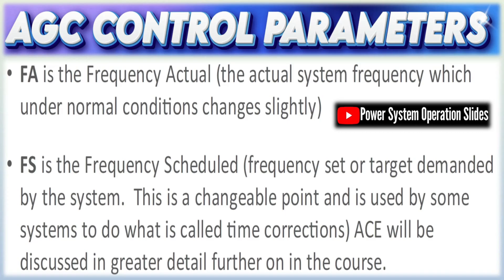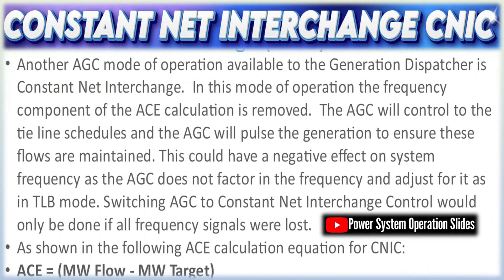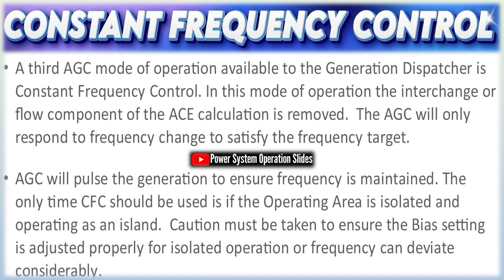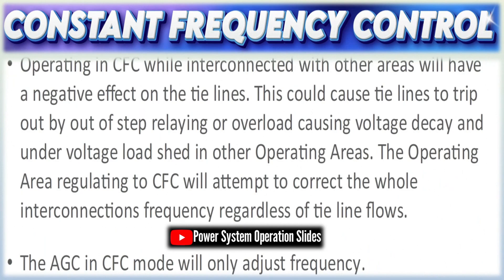Some of the critical control parameters that guide AGC operation are: participation factors, which dictate how much each unit contributes to the overall control effort; ramping limits, which ensure that units increase or decrease output at a safe and manageable rate; the frequency bias factor, which determines how strongly frequency deviations influence the control signal; minimum and maximum generation levels, which bound the control actions to prevent overloading or under-utilizing resources; and gain settings and hysteresis, which fine-tune the response to avoid excessive oscillatory behavior near the set points. These parameters are calibrated based on the dynamic characteristics of the power system and the specific performance requirements of the grid.